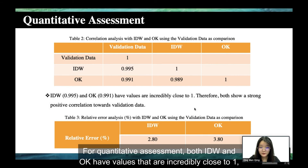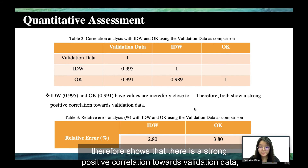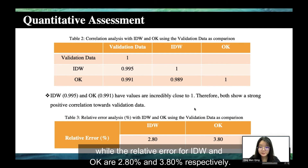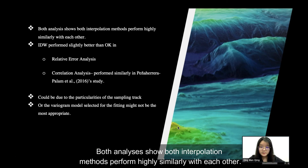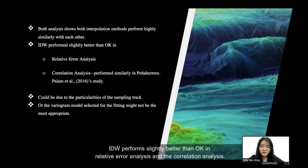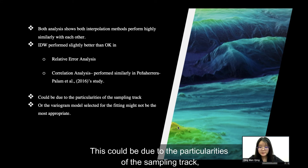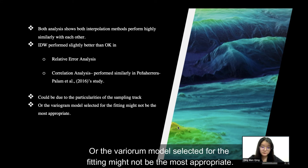For quantitative assessment, both IDW and Kriging have correlation values incredibly close to 1, showing strong positive correlation towards validation data. The relative error for IDW and Kriging are 2.8% and 3.8% respectively. Both analyses show that both interpolation methods perform highly similarly to each other, with IDW performing slightly better than Kriging in both relative error and correlation analysis. This could be due to the particularities of the sampling track or the variogram model selected not being the most appropriate.